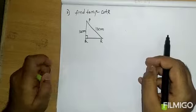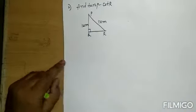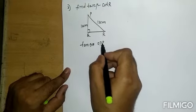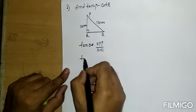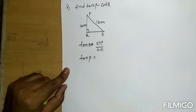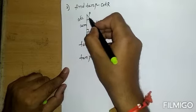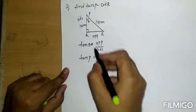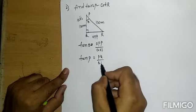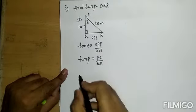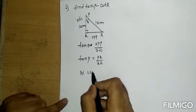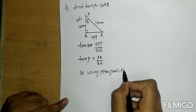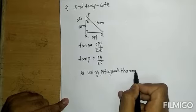Second question: find tan P minus cot R from the given figure. Tan theta equals opposite by adjacent. By using Pythagoras theorem, we need to find the unknown side QR.